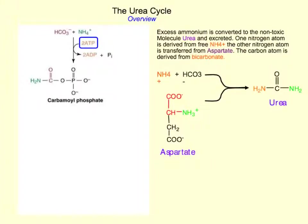The production of urea is basically taking a nitrogen from ammonium ion, a carbon from bicarbonate, and a nitrogen from aspartate, and forming a double nitrogenous compound known as urea.